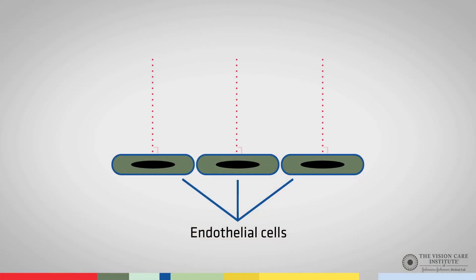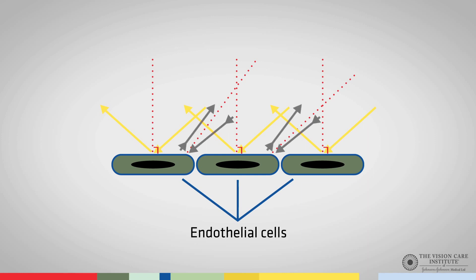The endothelial surface is viewable because most of the light coming from the illumination system will be reflected off the endothelial cells and in towards the microscope, as shown by these yellow arrows. At the curved surfaces where the cells meet, the light will be reflected away from the microscope in another direction. As a result of this, they will appear relatively dark, so the endothelial cells will appear as bright hexagonal surfaces, while the edges will appear to be black, so that the surfaces will be outlined by a black border.